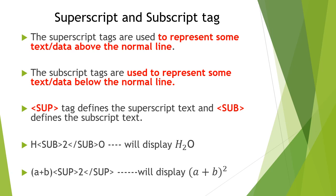Next are superscript and subscript tags. Sometimes in an HTML document we need to display chemical or mathematical formulas. The superscript tag is used to represent text or data above the normal line — for example, x raised to the power 4, or (a+b)². The subscript tag is used to represent text or data below the normal line, like H₂O or CO₂.